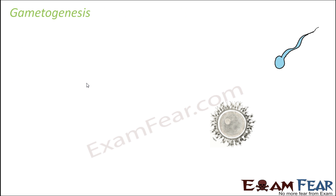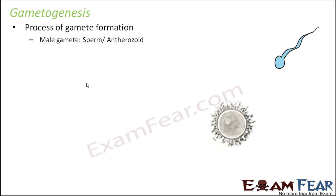Gametogenesis is the process of gamete formation. In a heterogamous situation, where gametes are not identical to each other, the male gamete is called sperm or antherozoid, and the female gamete is called egg or ovum. Generally, sperm and egg are the commonly used terms. The question is how these sperms and eggs are formed inside the body — that is what we will understand through the process of gametogenesis.